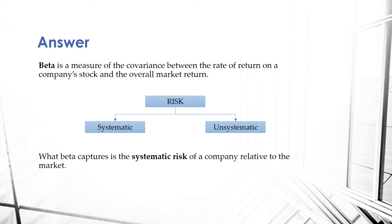Whereas systematic risk — if there is a nationwide crisis or the price of oil spikes instantaneously — that will impact all of those companies. So that's systematic risk and it can't be eliminated. When we talk about beta, beta is really a measure of risk for that respective company relative to the market, and that risk is systematic risk, not unsystematic. So that's very important to understand.